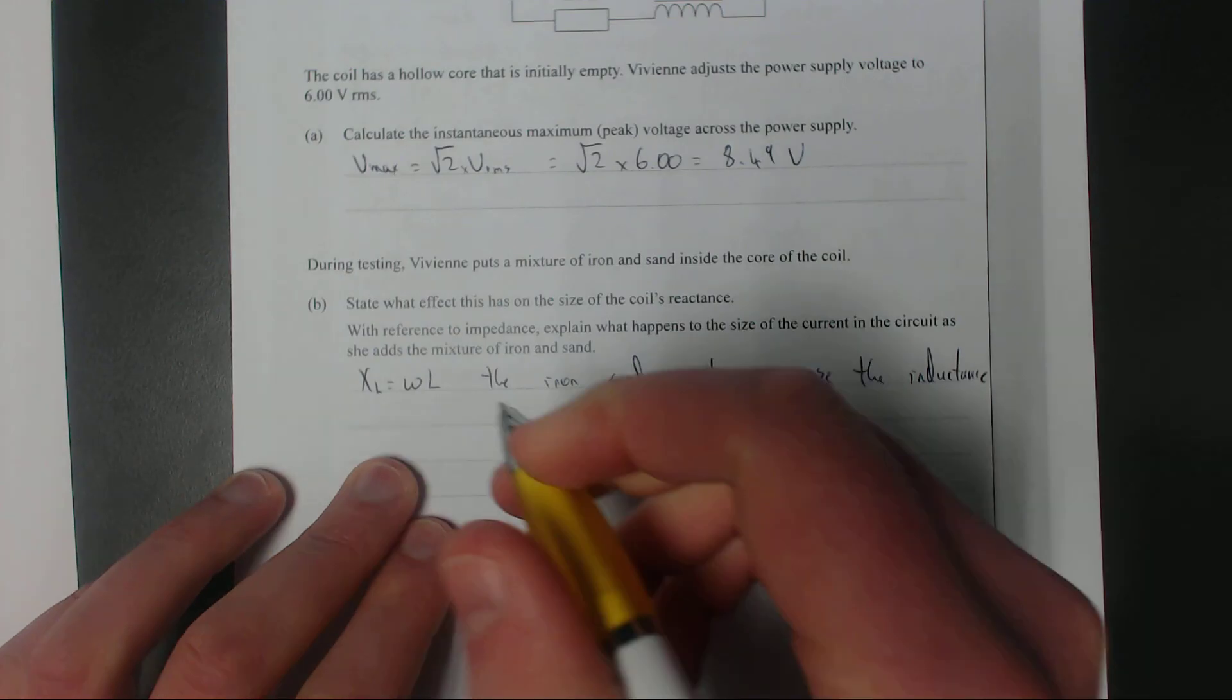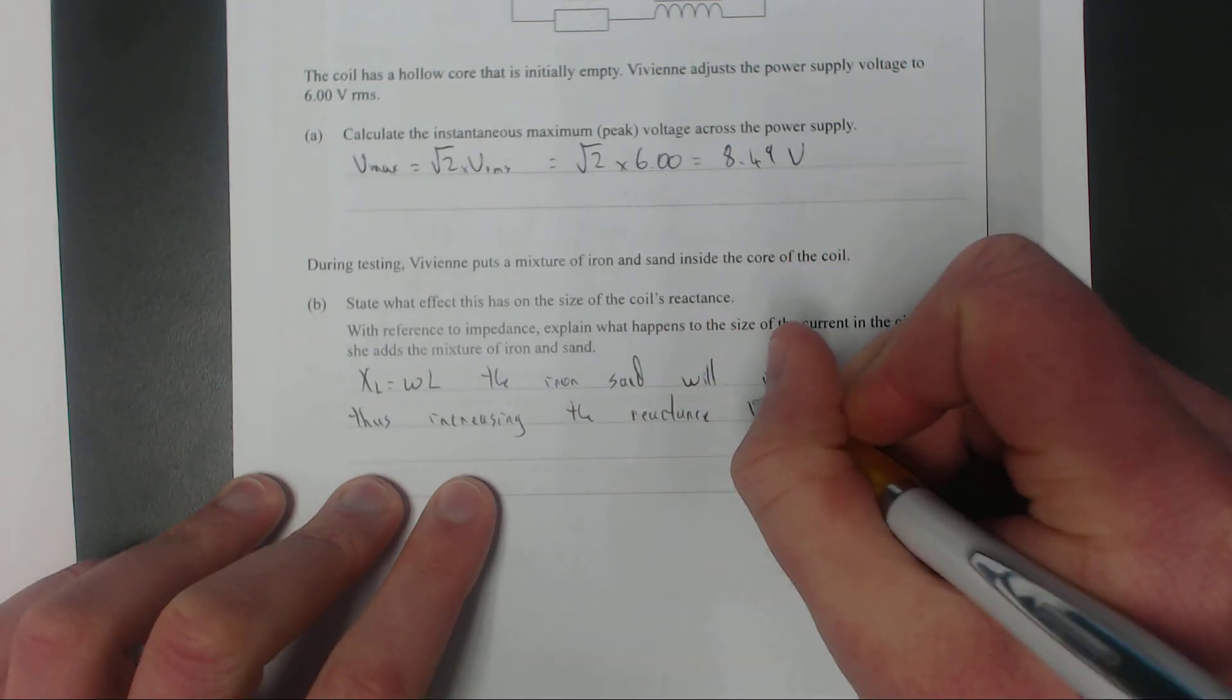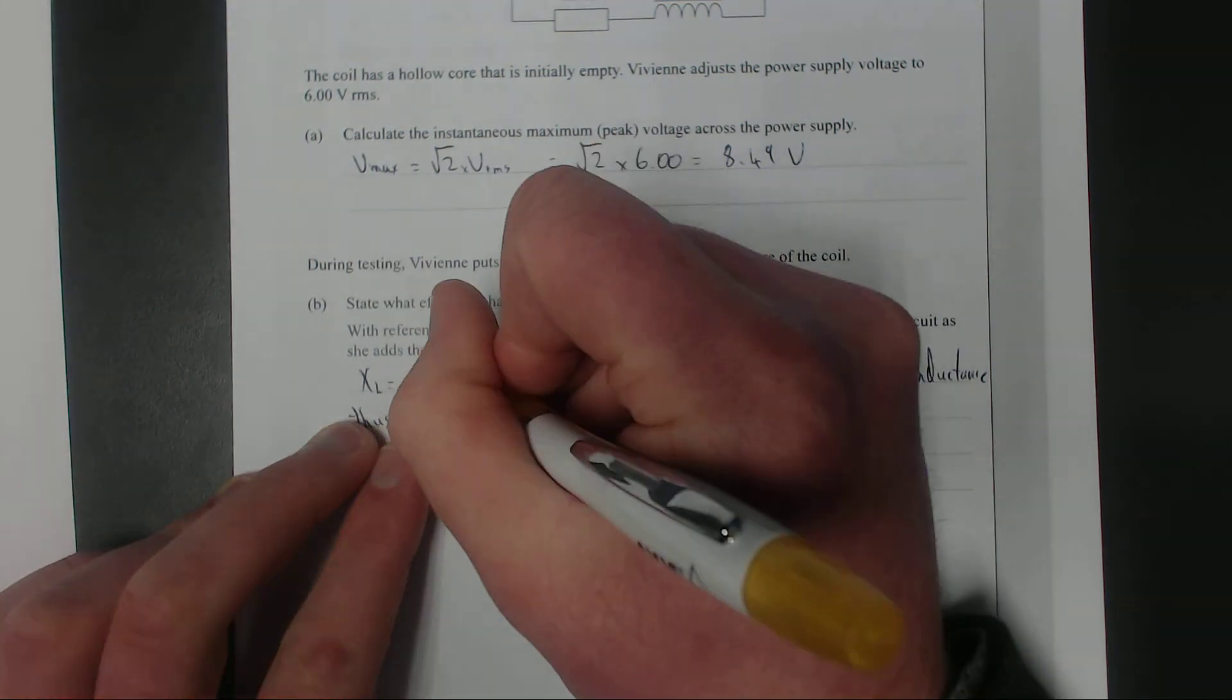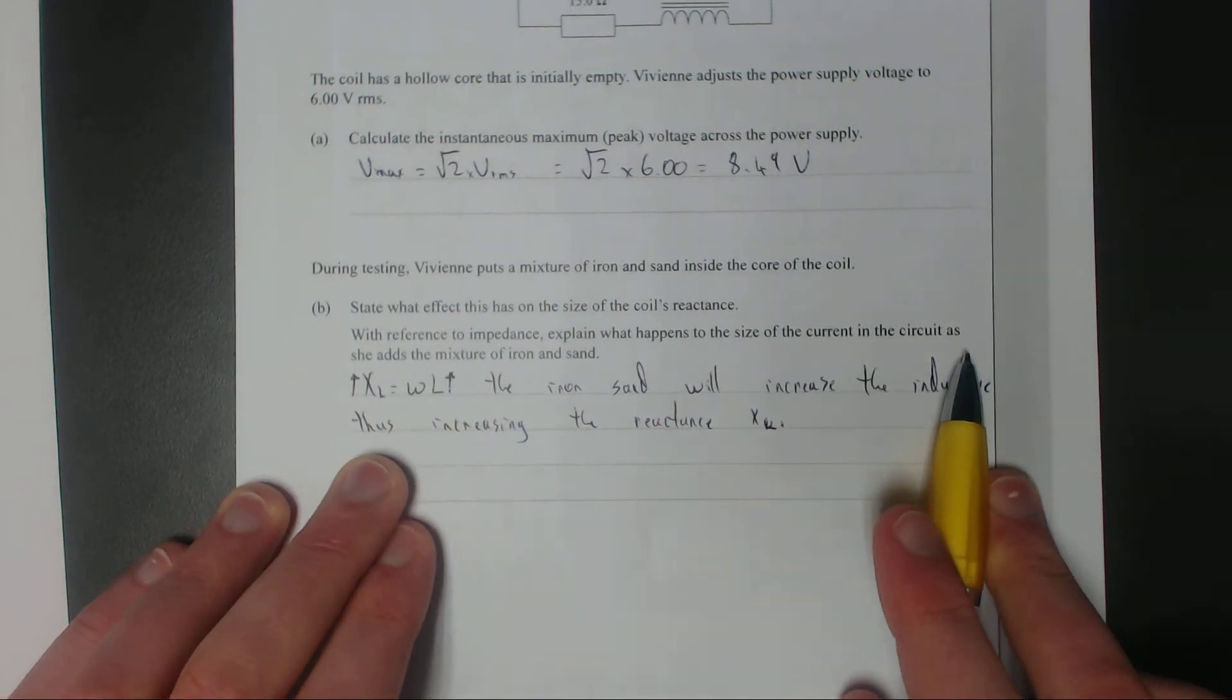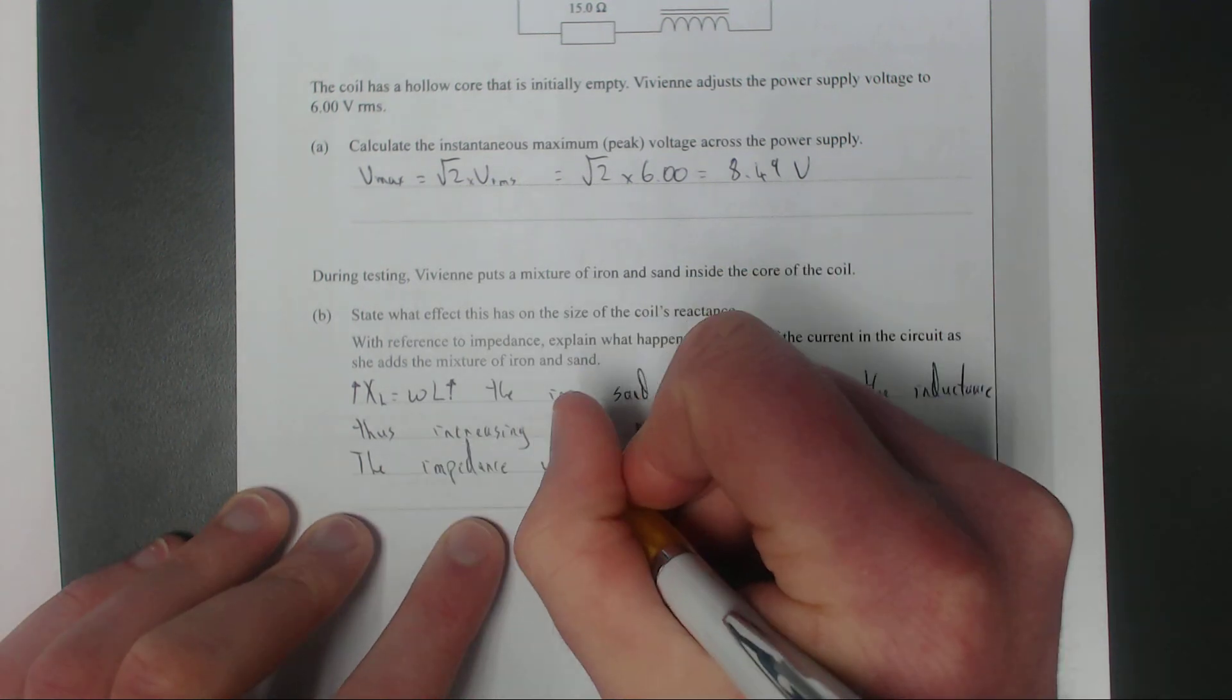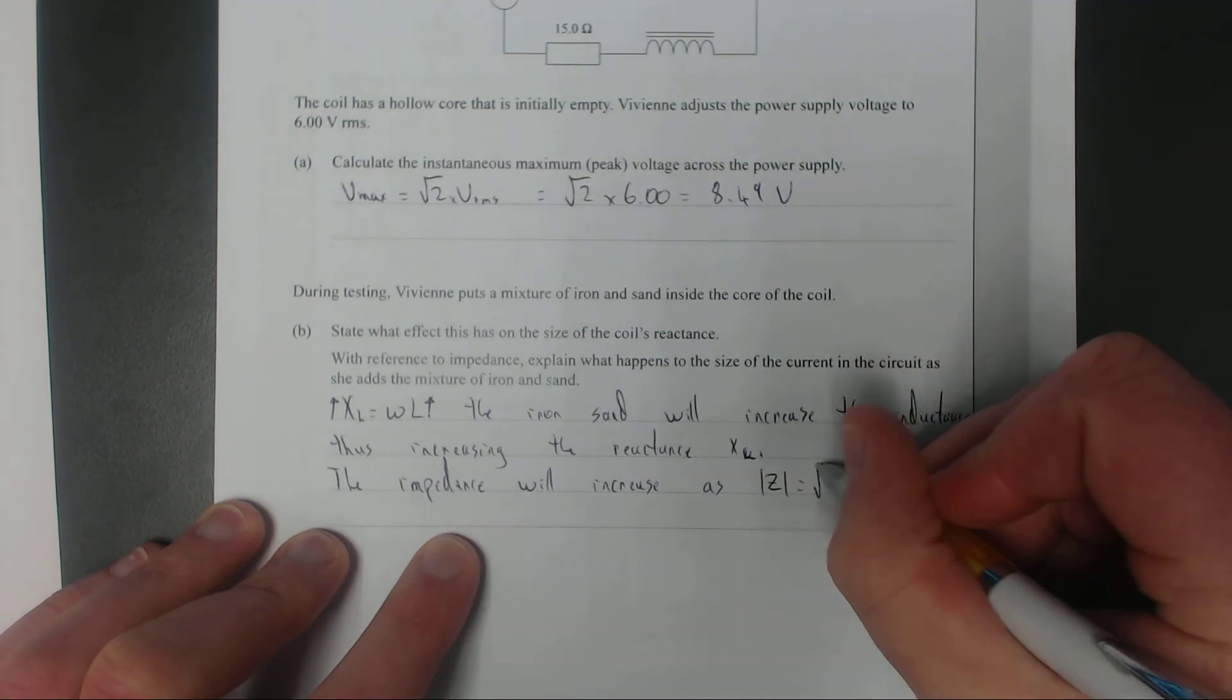So that's going to increase the reactance because the inductance goes up, which means the reactance goes up since the frequency is still the same. With reference to impedance, explain what happens to the size of the current. The impedance is the square root of the resistance squared plus the reactance squared. Since there's no capacitor, I'll just put XL because they're 90 degrees out of phase.